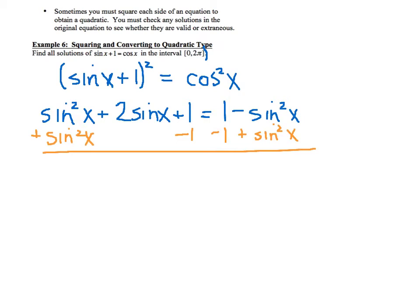You can also add sine squared x to both sides. And so then what we end up with is 2 sine squared x plus 2 sine of x, and that is going to end up equaling 0.